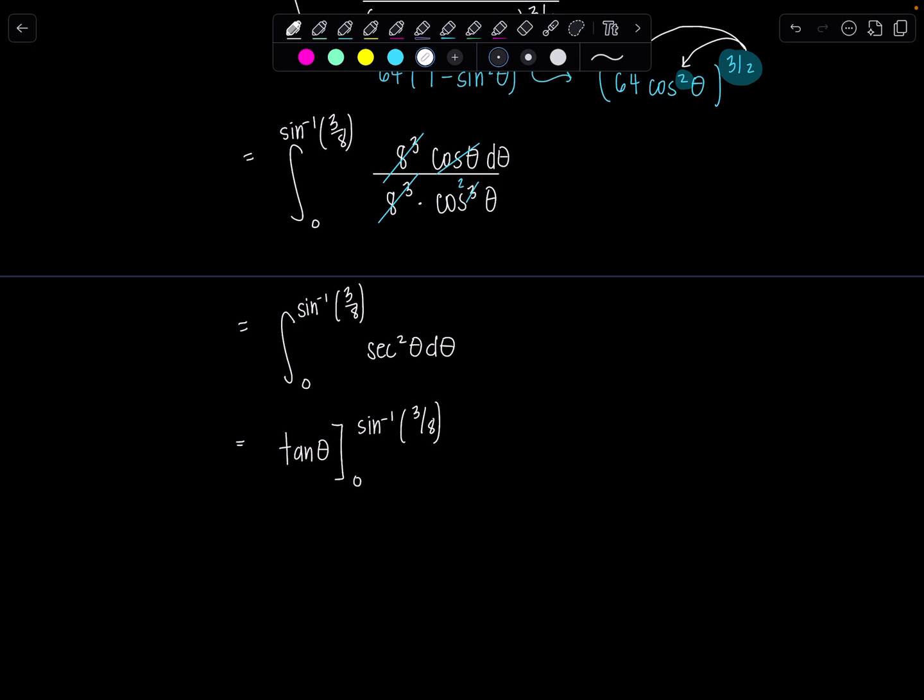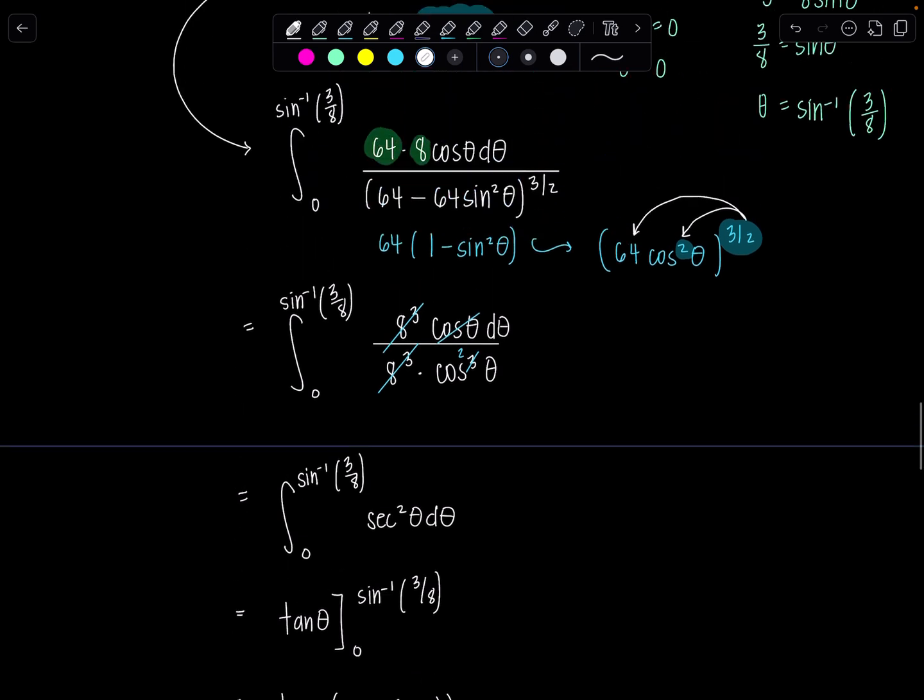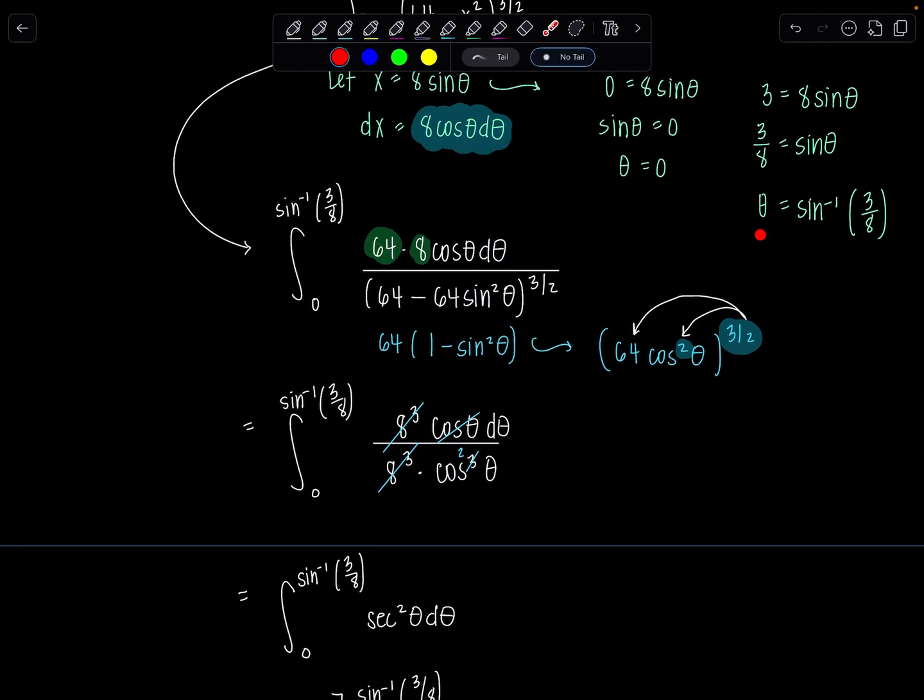So you do upper limit minus lower limit. So we're going to have tangent of sine inverse of 3 eighths. Don't freak out. I'll help you evaluate that in just a second. Minus tangent of 0. Now just keep in mind, anytime you see an inverse trig function, arc sine, sine inverse, arc cosine, cosine inverse, those all represent an angle. Remember we called it theta up here, right? Theta was sine inverse of 3 eighths. It's an angle.